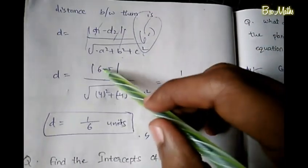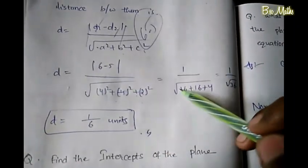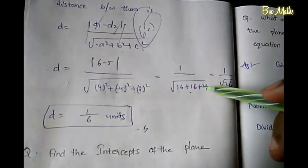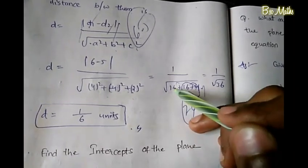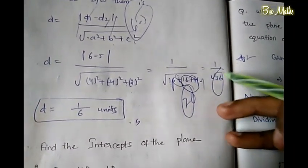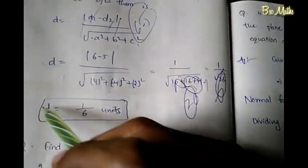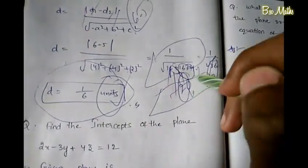The distance d = |d1 - d2| / √(a² + b² + c²) = |6 - 5| / √(4² + (-4)² + 2²) = 1 / √(16 + 16 + 4) = 1 / √36 = 1/6 units. The distance between the two parallel planes is 1/6 units.